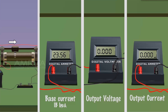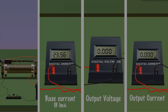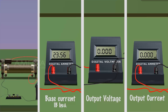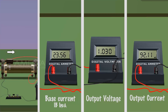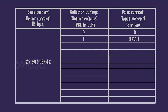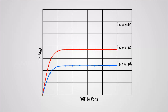Adjust the rheostat RH1 and increase the base current to another constant value. Note the collector voltage VCE and collector current IC. Record the values in the tabular column. By keeping the base current constant, the collector voltage VCE is increased by adjusting the rheostat RH2. Note the collector voltage VCE and collector current IC. Repeat the experiment by again increasing the collector voltage VCE. Plot the VCE vs IC graph for the constant IB. These graphs are called the output characteristics of the transistor.